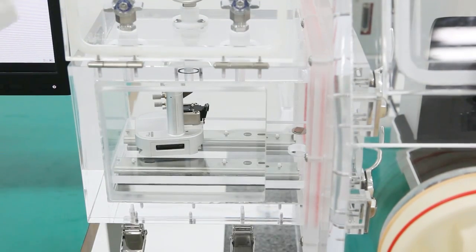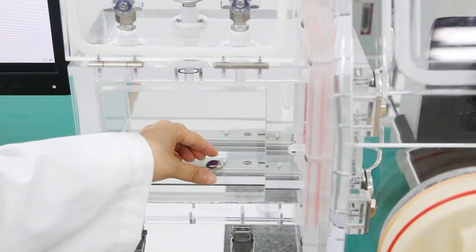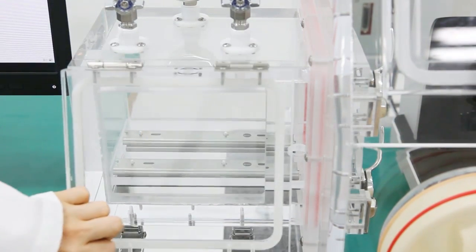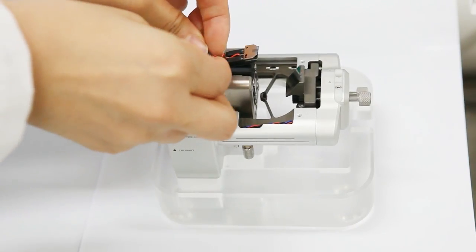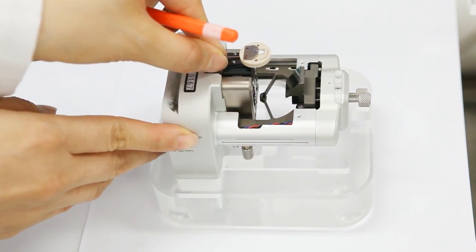Then open the antechamber's door to remove the sample as well as the head in order to change to another cantilever. Here, we will switch to a liquid probe hand for liquid imaging.